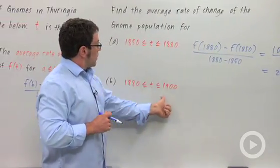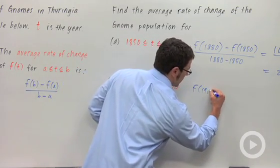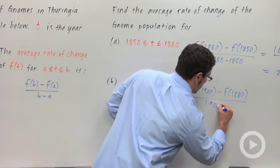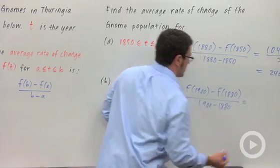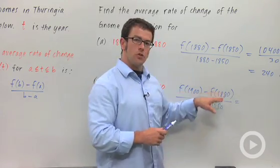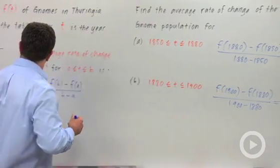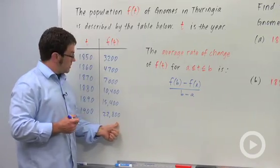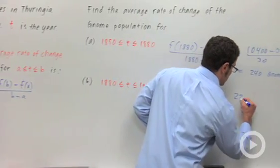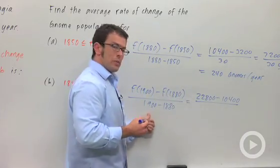Now let's take a look at the rate of change of the population from 1880 to 1900. That's going to be f of 1900 minus f of 1880, over 1900 minus 1880. Always remember it's final population minus initial population — or final quantity minus initial quantity, whatever f measures. At 1900 we had 22,800 gnomes, and 10,400 in 1880.